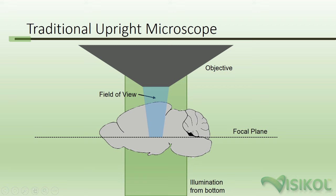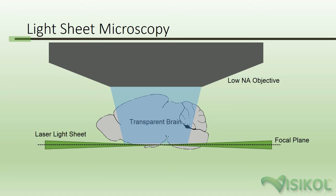To understand how light sheet microscopy works, it's important to understand why traditional microscopy does not work for imaging whole, cleared, and labeled tissues. If you were to take a cleared and fluorescently labeled mouse brain and place it on an upright microscope, the light source will excite the fluorophores throughout the entire depth of the tissue. This will result in a bright and blurry image where signal well outside of your objective's focal plane severely alters your image.